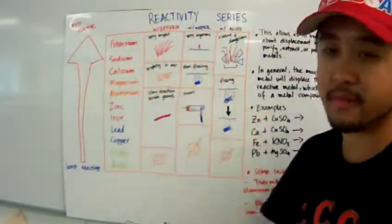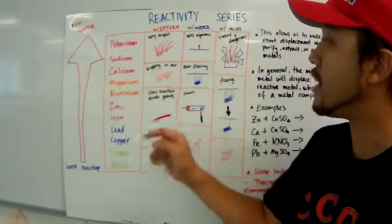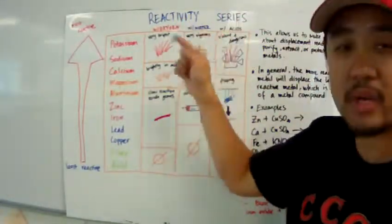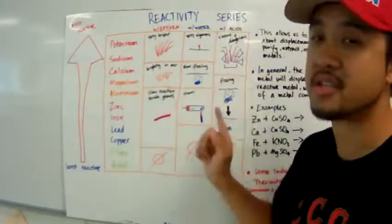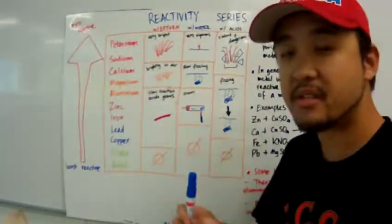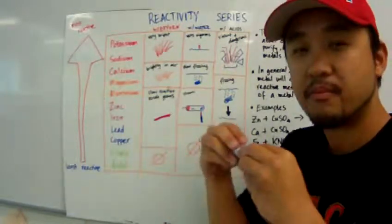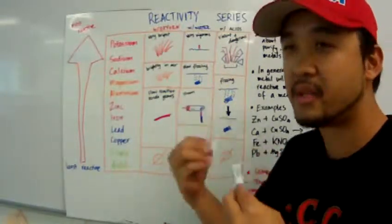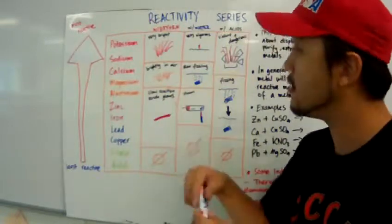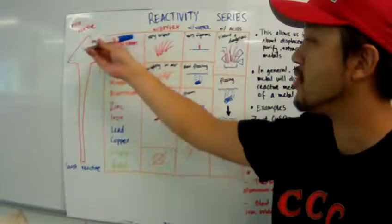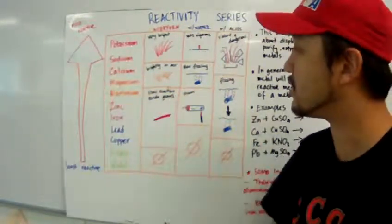We tabulated all sorts of observations. And today we're going to combine all these observations and create what we call a reactivity series. A reactivity series is basically a summary of metals and their reactivity to different elements, based on from most reactive to least reactive.